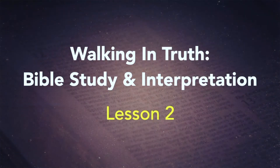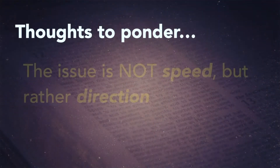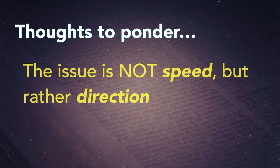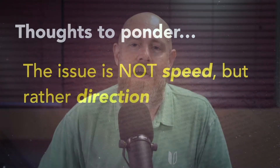Take your outline, and we're going to jump right in with our study. We're calling this Walking in Truth Bible Study and Interpretation. We've started on your outline with some introductory thoughts — some things, some thoughts to ponder. The very first one is: the issue in Bible study and interpretation is not speed. It's not trying to get through it as fast as you can. Though I've used Bible plans such as reading through the Bible — 66 books in 66 days — the issue in what we're talking about today is not speed. Rather, the issue is direction. We want to be sure we're going the right direction in our Bible study.